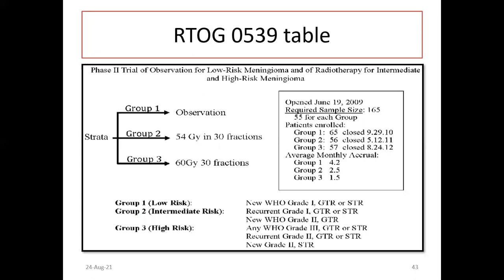Looking at the RTOG 0539 table, they have divided patients into three groups. Group 1 is low risk: WHO grade 1 with gross total resection or subtotal resection. Group 2, intermediate risk, includes: recurrent grade 1 GTR or STR, new WHO grade 2 GTR, with gross total resection.